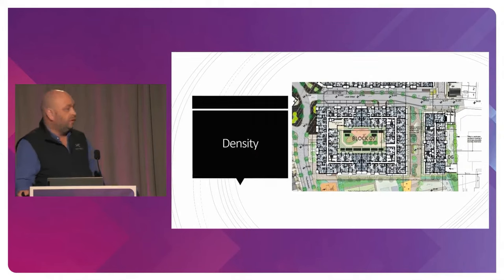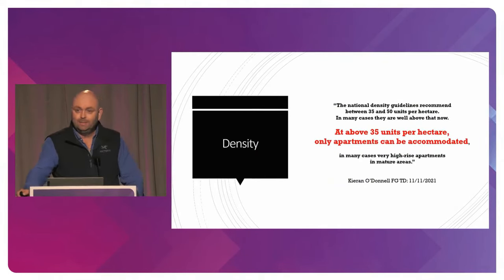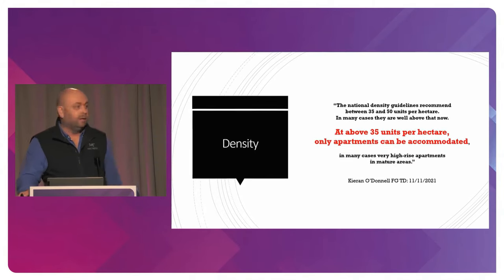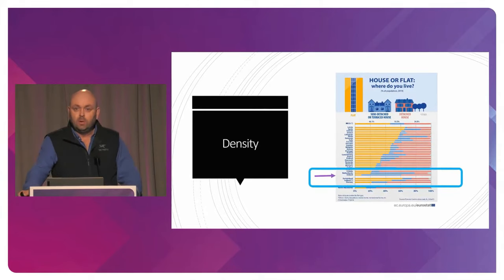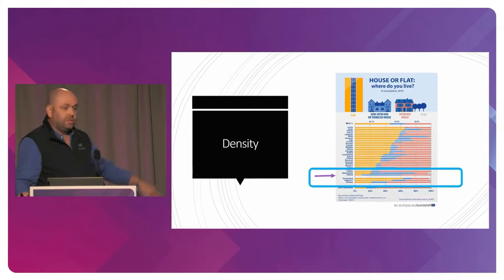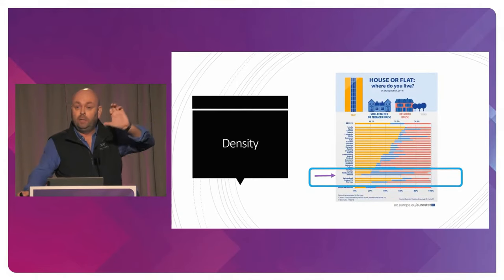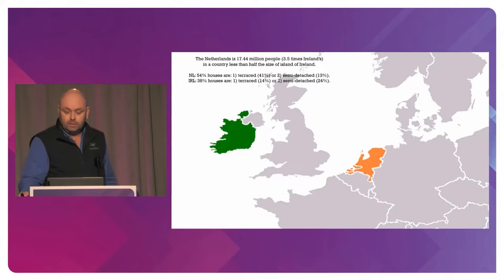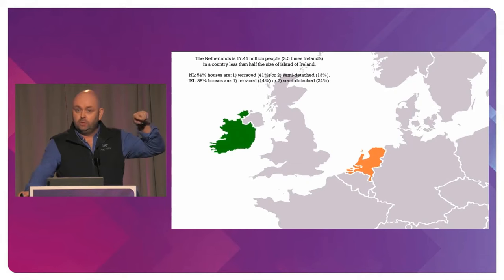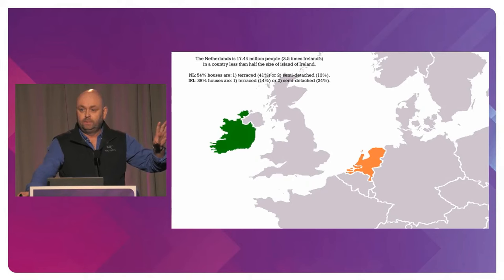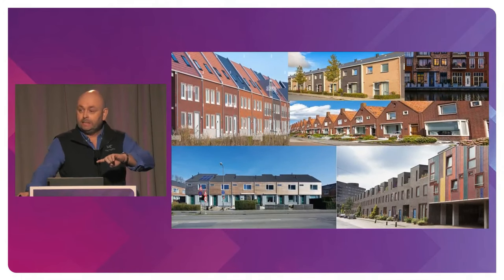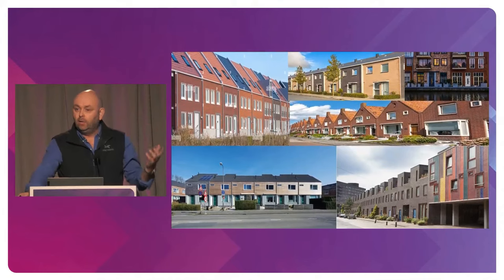There's an obsession with density. Above 35 units per hectare, only apartments can be accommodated — a Fianna Gael TD was questioning that rather than supporting it. Density means more units on a site, and therefore what happens to the land? Looking at Eurostat figures: Ireland has many apartments but also semi-Ds and terrace houses and one-offs. The Netherlands — one-third the size of Ireland, with 17.5 million people — has more semi-Ds and terrace houses than we do. How? Because they build dense but not high. It can be built and sold affordably. You don't need high-rise to get density — you just need to build smarter.